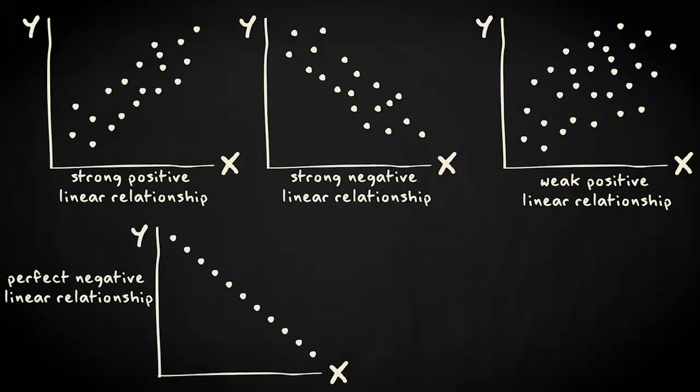This is a perfect negative linear correlation. It is perfect because all cases lie exactly on the line.